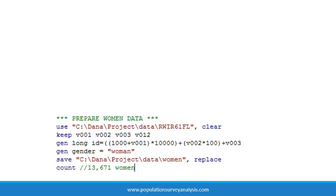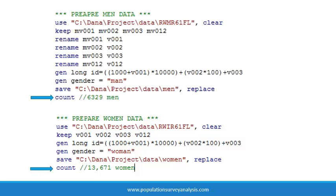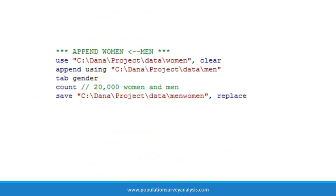Then we repeat these steps with the women's individual recode dataset, creating variables for person ID and gender. We check the count of observations in each file and make a note so we can check our work later. Now that both datasets have the same variable names, we are ready to append them. The append statement itself is quite easy to use. First, open the master dataset, in this case the women file that we just created.